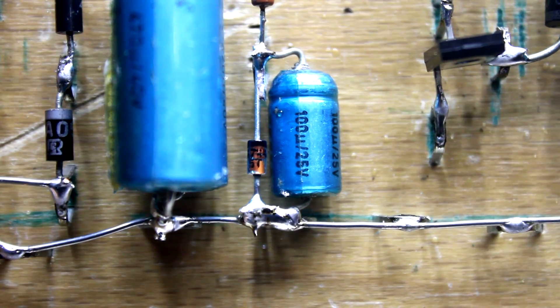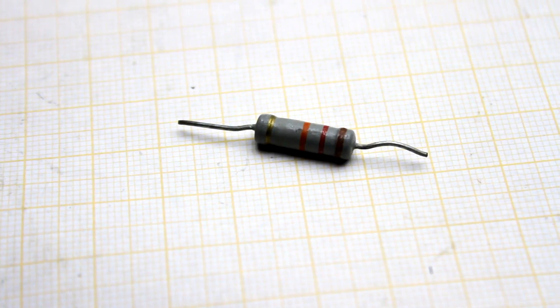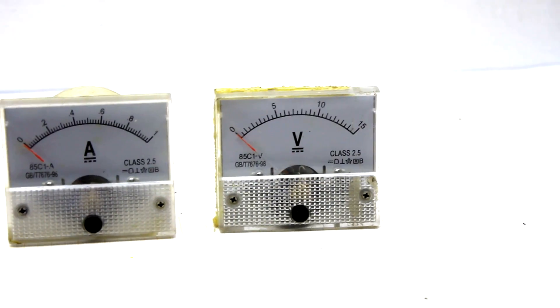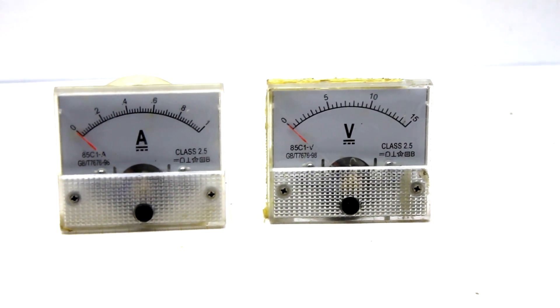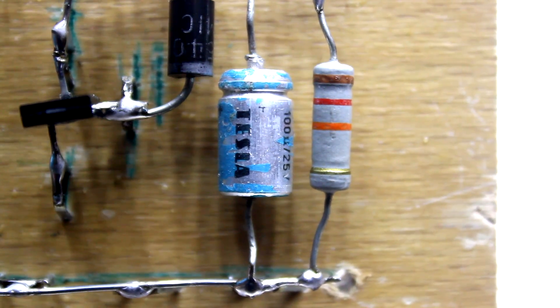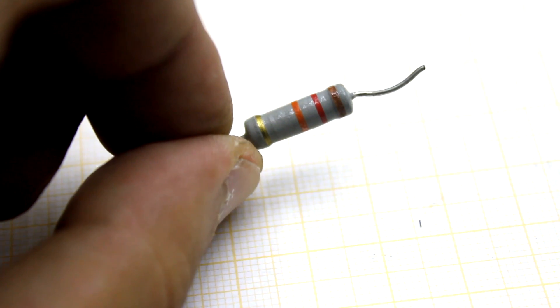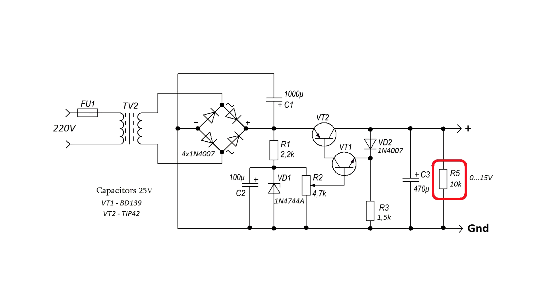Capacitors are needed to filter any noise and ripple. The output resistor is a load resistor designed for correct operation of the voltmeter. Without it, when the output voltage decreases, the capacitor remains charged and the pointer of the voltmeter will deviate with delay. The resistance of this resistor may deviate from the indicated by 30%.